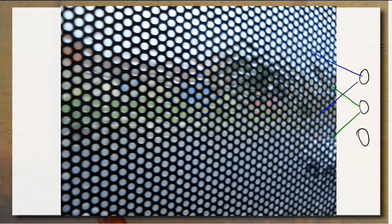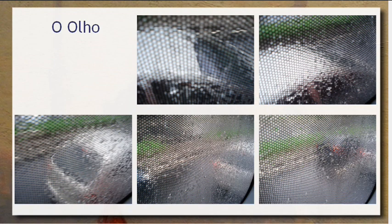O cérebro vai compor a imagem. Se você já viu filmes que tentam reproduzir o olho das formigas ou das abelhas, o nosso olho também é mais ou menos desse mesmo modo. A gente recebe, na verdade, uma matriz de pontos de luz — como essa imagem de um carro andando. E o cérebro vai fazer você perceber a coisa como se fosse uma imagem contínua. Para fazer isso, o cérebro faz uma espécie de composição dos vários pontos e forma na sua mente uma percepção de imagem contínua.